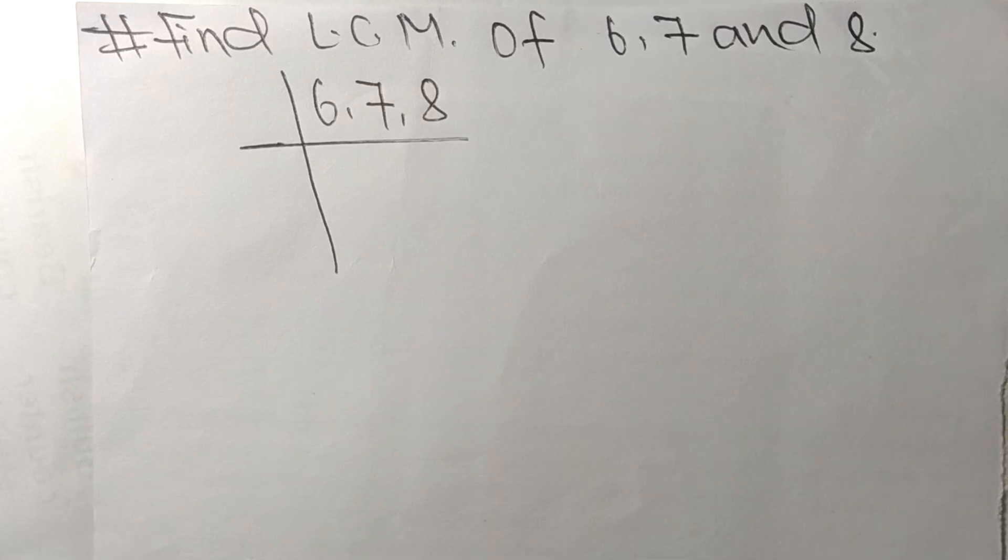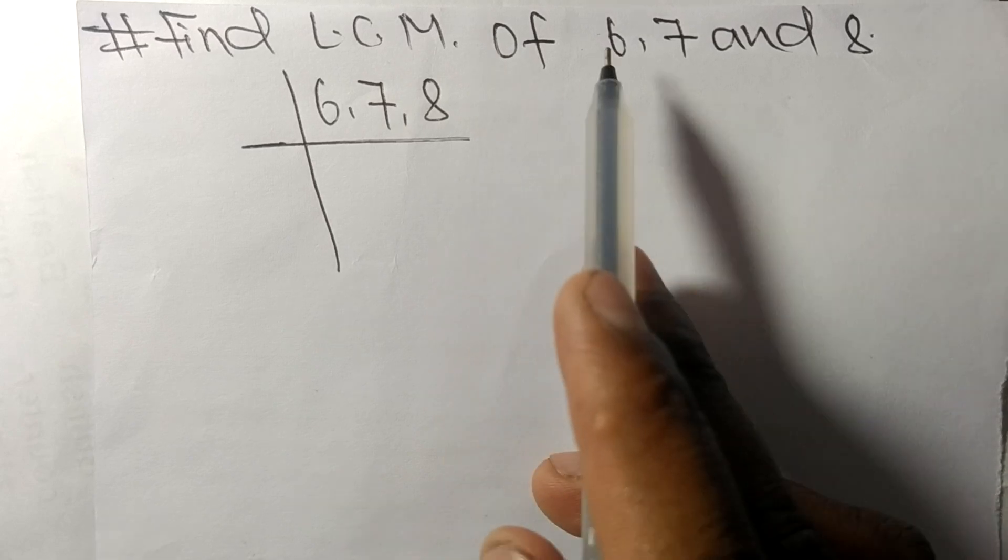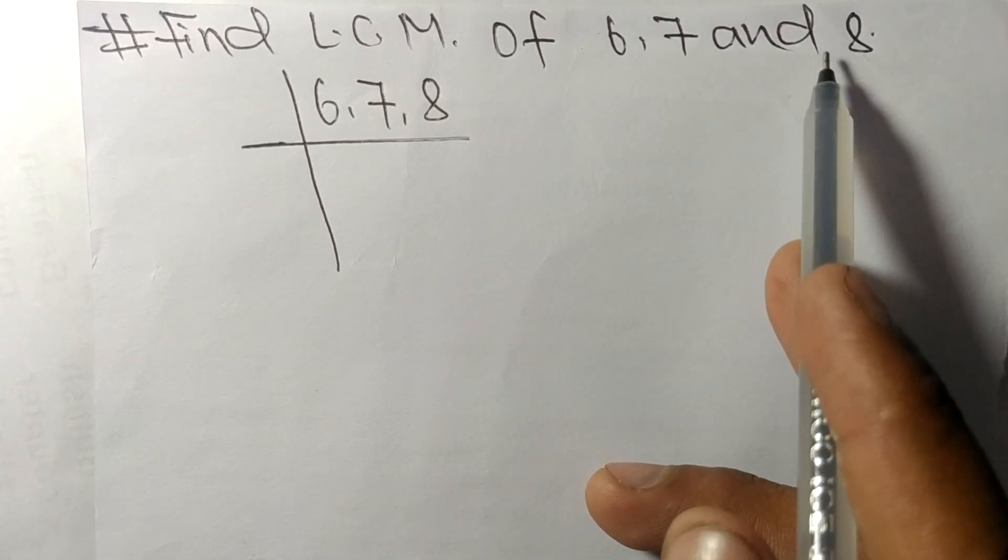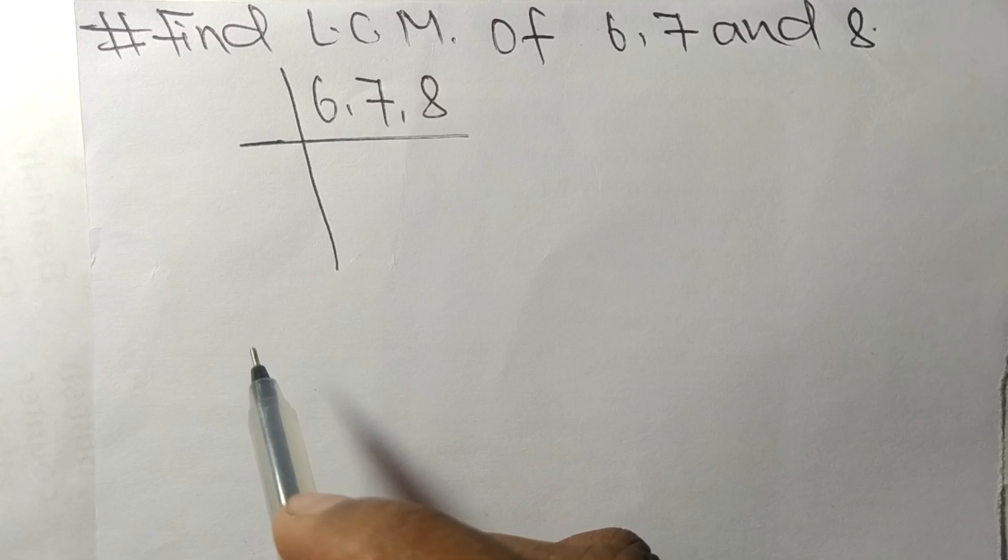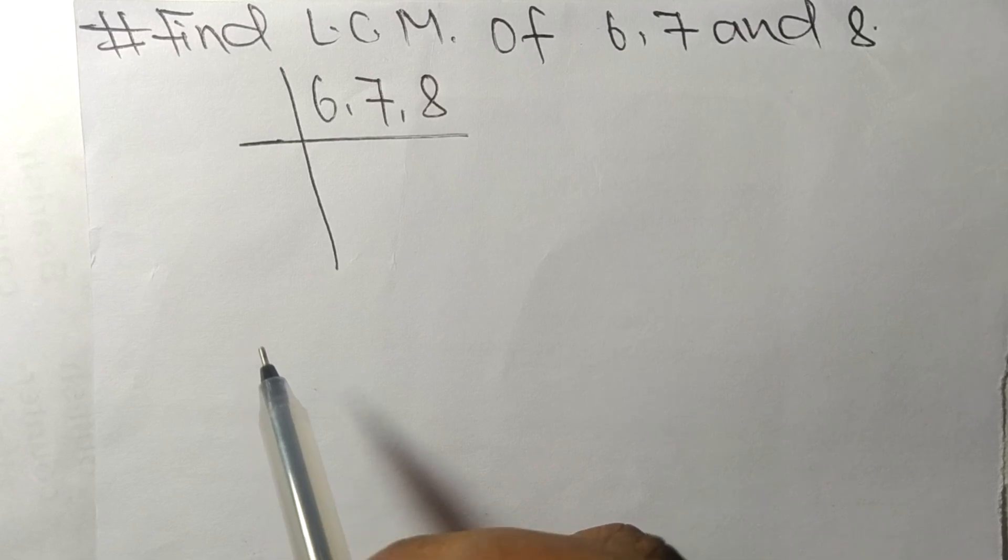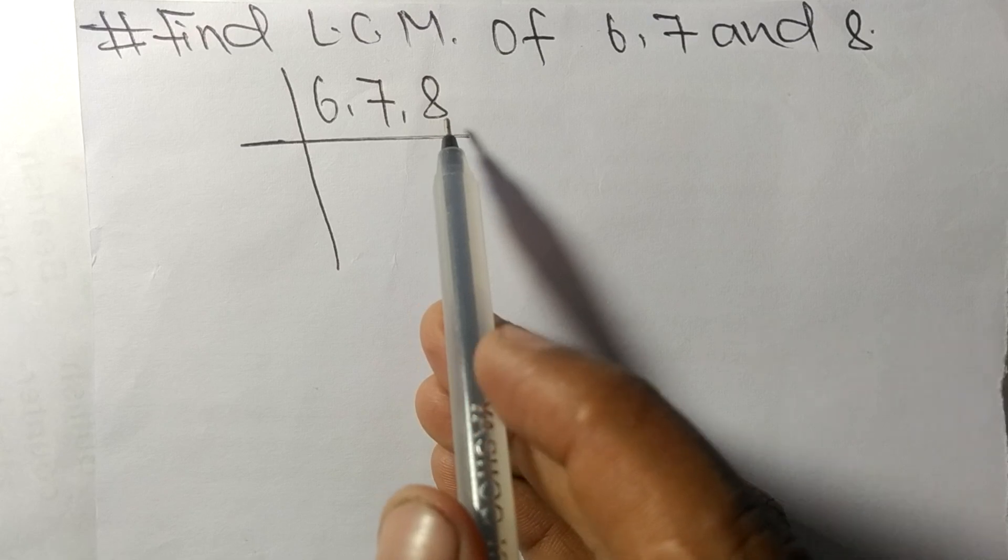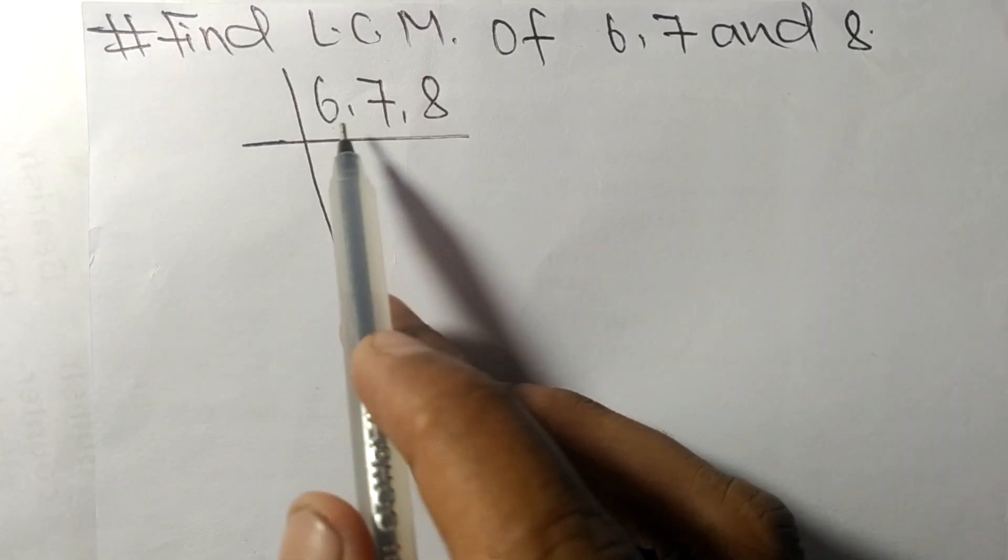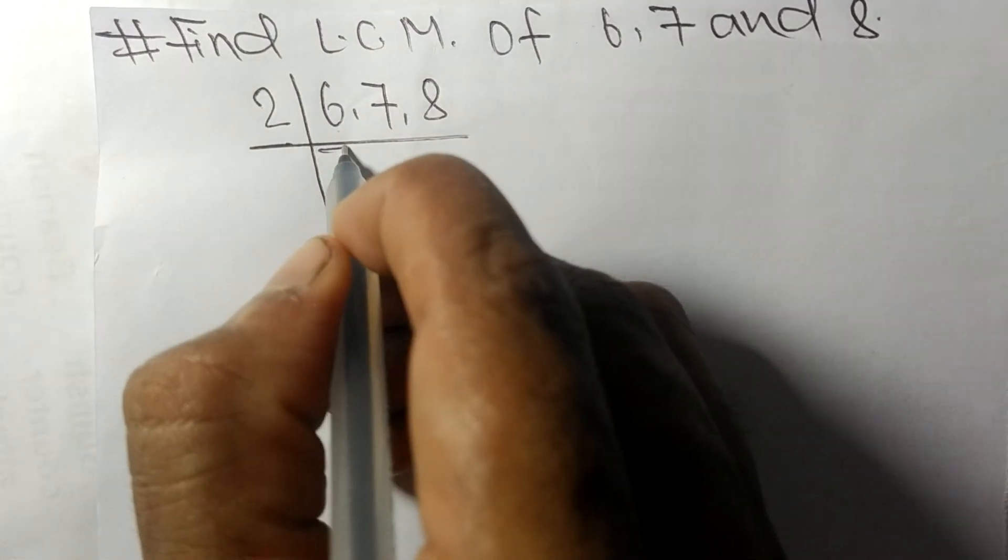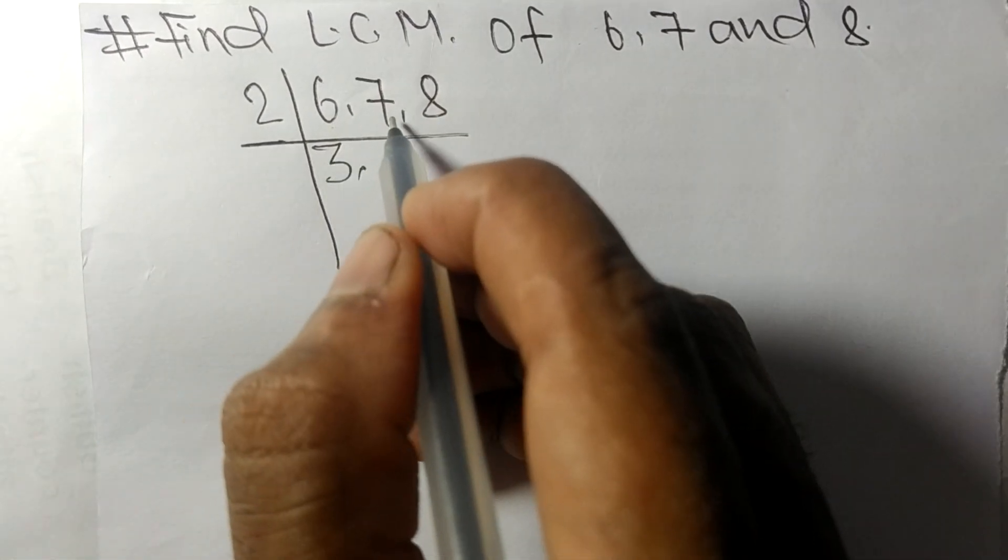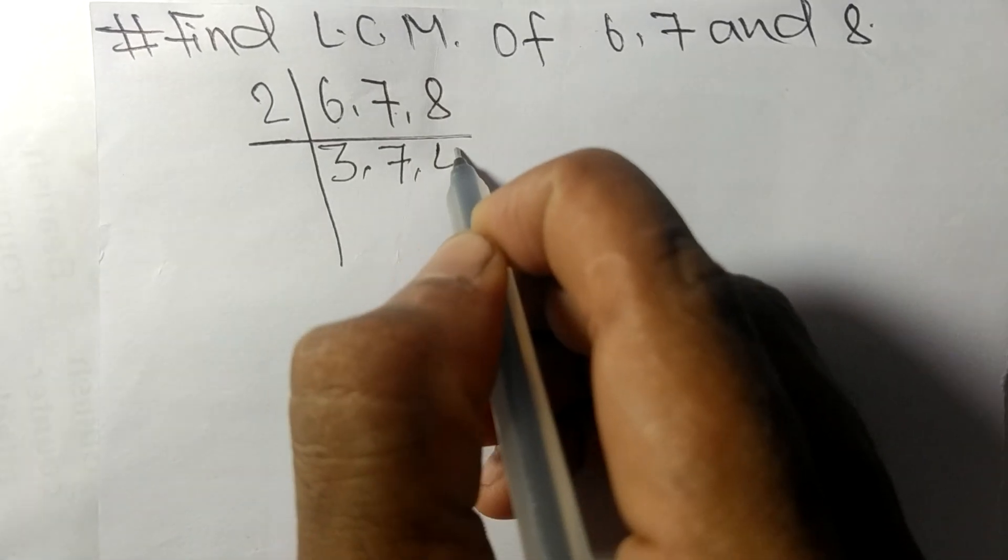Today in this video we shall learn to find the LCM of 6, 7 and 8. To find LCM, we have to choose the lowest number that can exactly divide any two of these numbers. So 6 and 8 are exactly divisible by 2. 2 times 3 means 6, 7 is not divisible so it stays the same, 2 times 4 means 8.